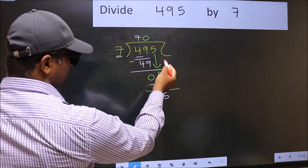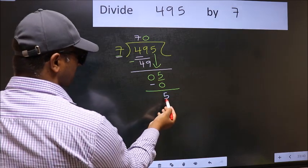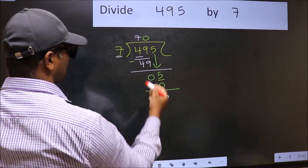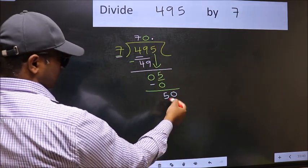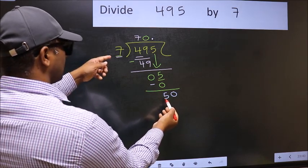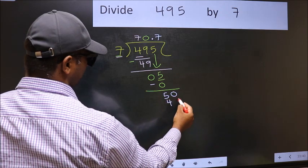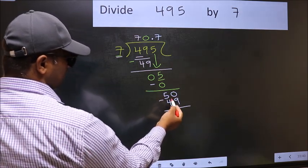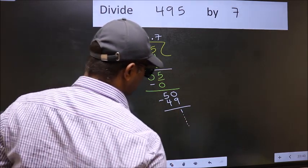Over here, we did not bring any number down, and 5 is smaller than 7. So now you can put dot and take 0. So 50. A number close to 50 in 7 table is 7 sevens 49. Now you should subtract. 50 minus 49, 1. And continue the division. I am not doing that.